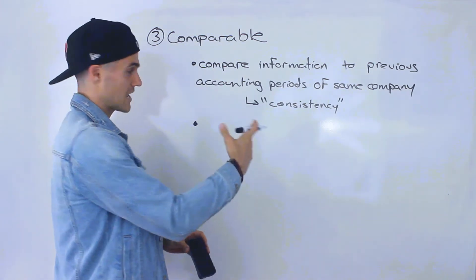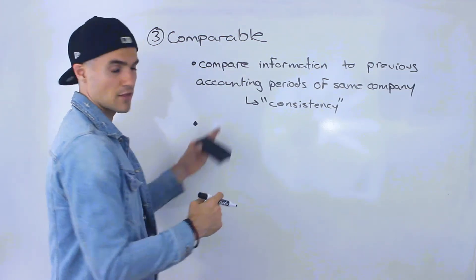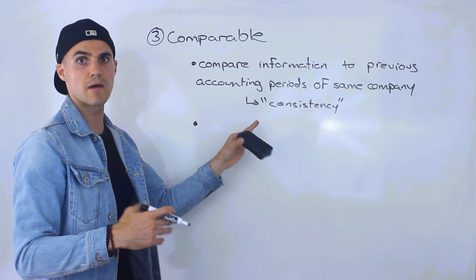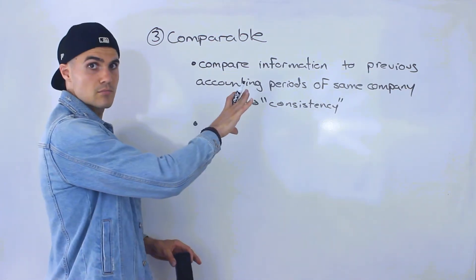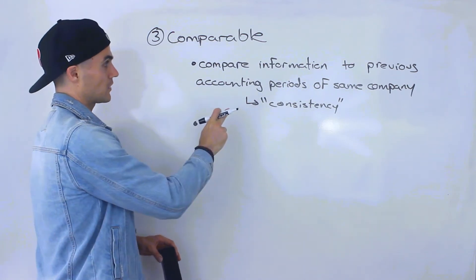Currency is an example of that. But there's other things too, like the methodologies used for estimates should be consistent throughout all the accounting periods.